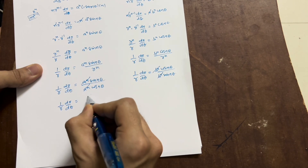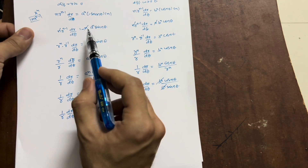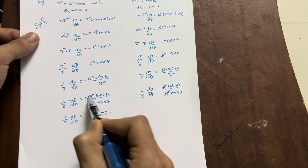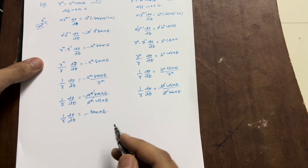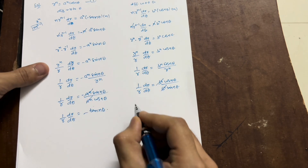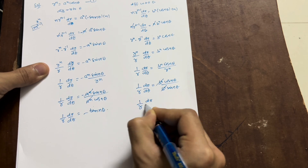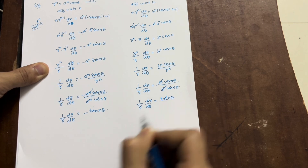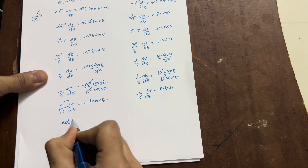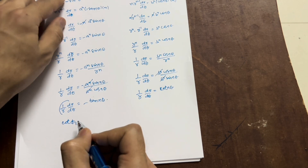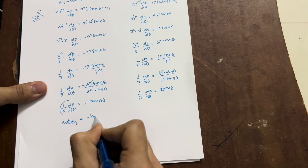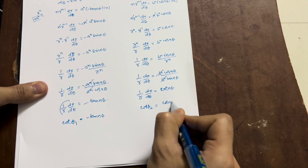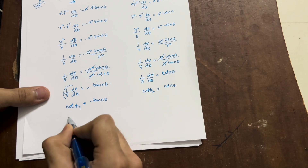We are left with: for the first curve, (1/r)·dr/dθ = −sin(nθ)/cos(nθ) = −tan(nθ); for the second curve, (1/r)·dr/dθ = cos(nθ)/sin(nθ) = cot(nθ). Note the negative sign in the first curve — I had missed it earlier. Since (1/r)·dr/dθ = cot φ, we can write cot φ₁ = −tan(nθ) and cot φ₂ = cot(nθ).